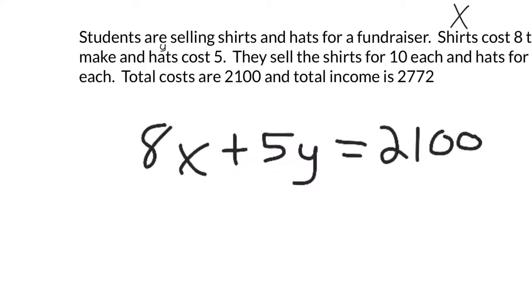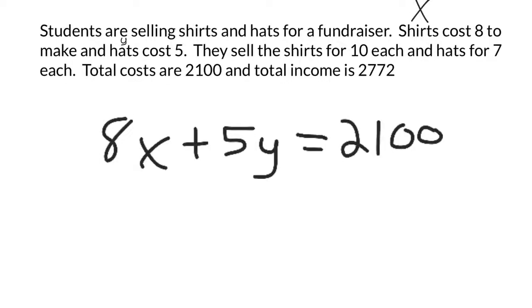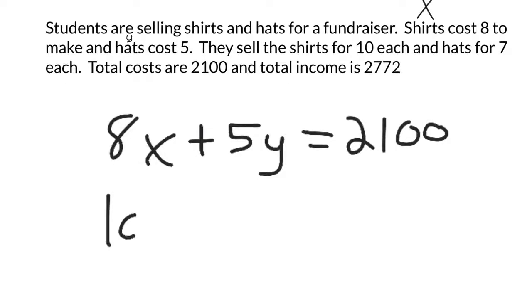And then you can do the same thing for the total income. They make $10 for each shirt and $7 for each hat. So 10 times the number of shirts plus 7 times the number of hats, that equals their total income of $2,772.